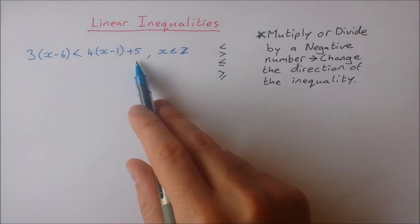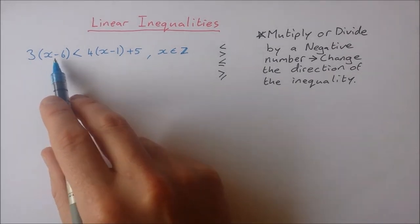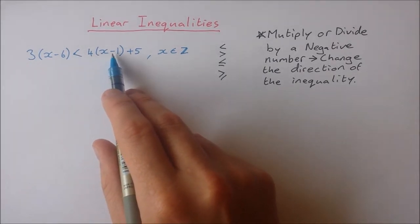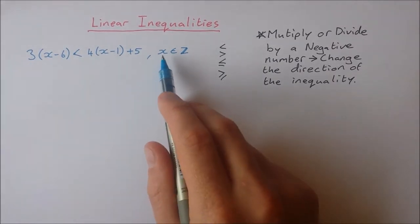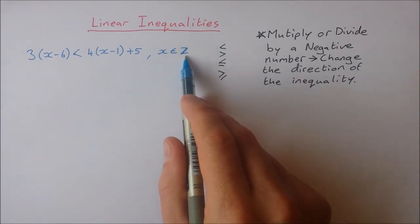Okay, let's take a look at this example right here. So we have 3 times x minus 6 is less than 4 times x minus 1 plus 5 and x is an element of z so x is an integer.